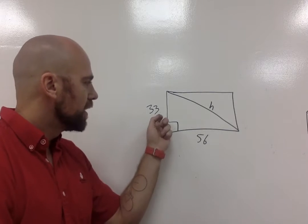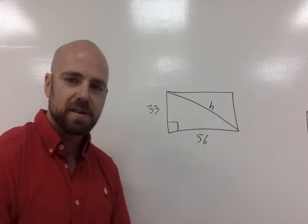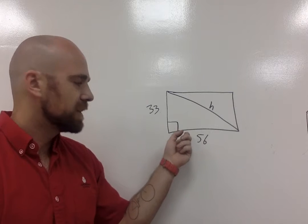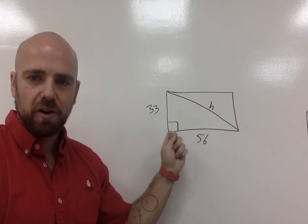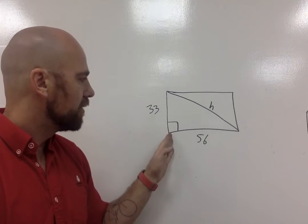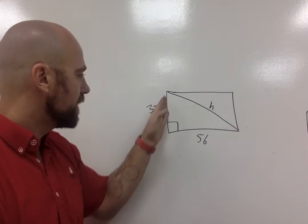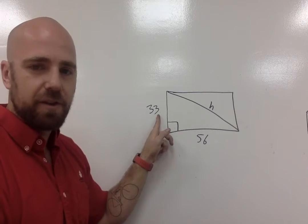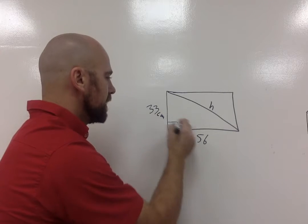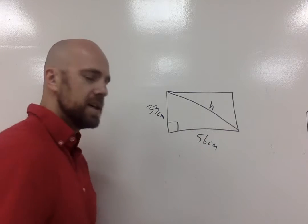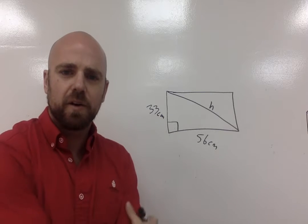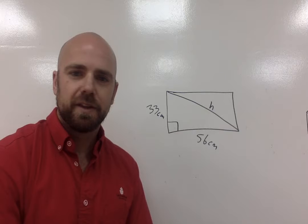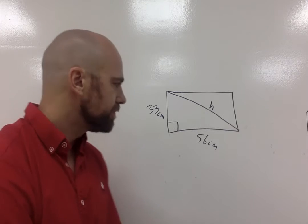So here we have our legs. So our legs, just as a reminder, are the two lines that are basically adjacent or touching or closest to our right angle. Alright, so we have our right angle right here and then we've got our two legs, so one of them is 33, we'll say centimeters, and we'll say the other one is 56 centimeters. Alright, so we're going to try to figure out what our distance is from corner to corner of this rectangle that we have.